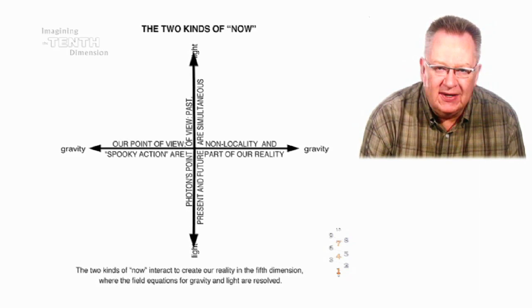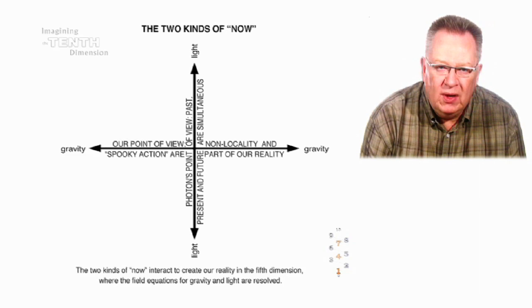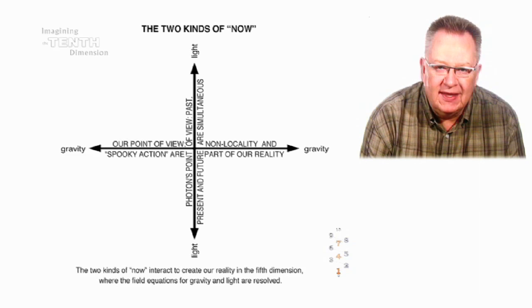This takes us back to the hard determinist viewpoint that there is really only one world line for our universe, and our free will is only a useful illusion, nothing more.